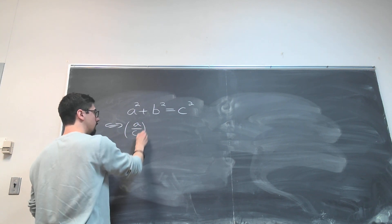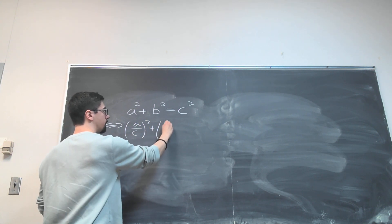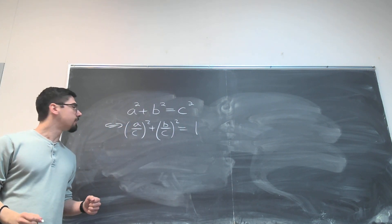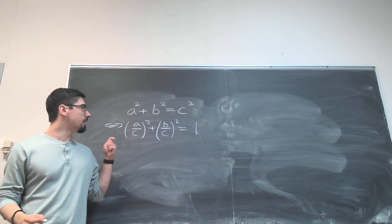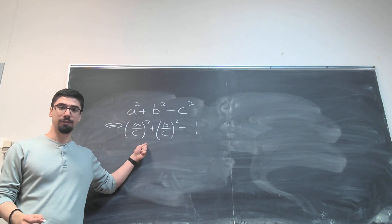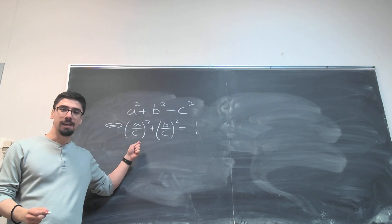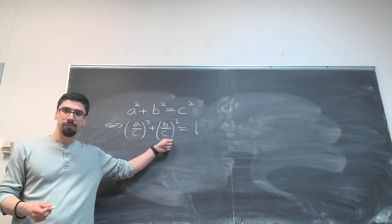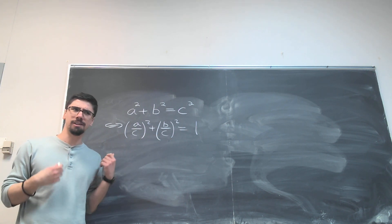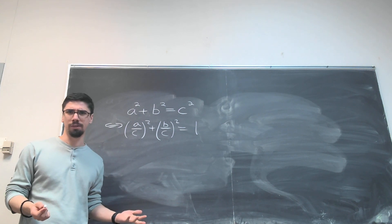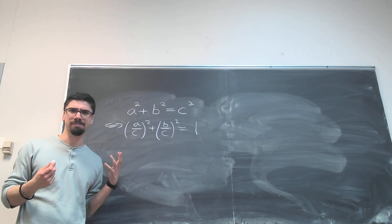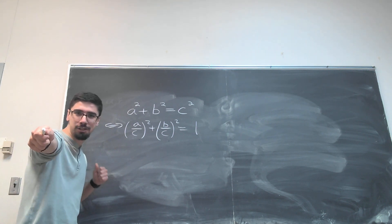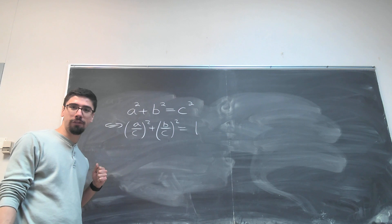This gives me (a/c) squared plus (b/c) squared equals one. And this is really nice because this indicates that we can find all of our Pythagorean triples as rational points on a circle. We have to look for those rational numbers. Now that doesn't really sound much better, finding rational points on a circle is not necessarily easy, so where do we start? I'm glad you asked. We use the stereographic projection.